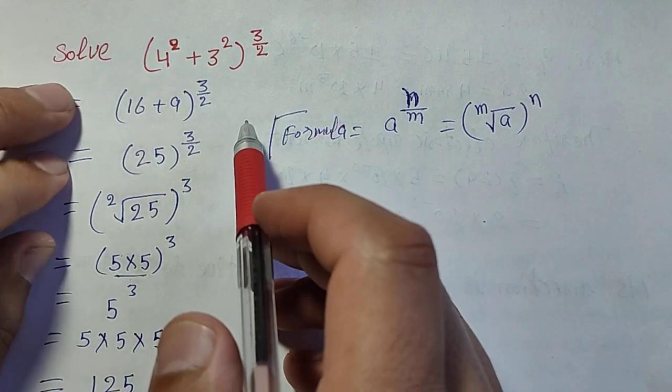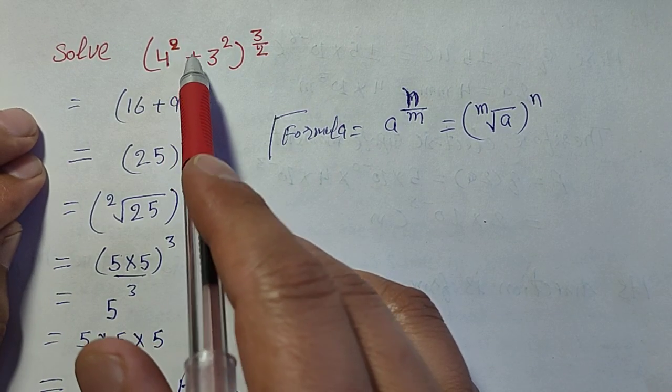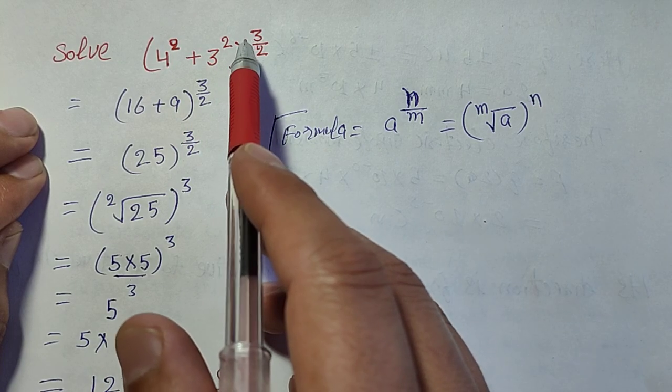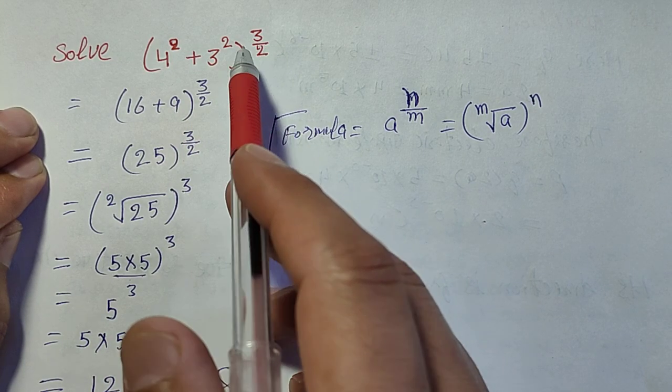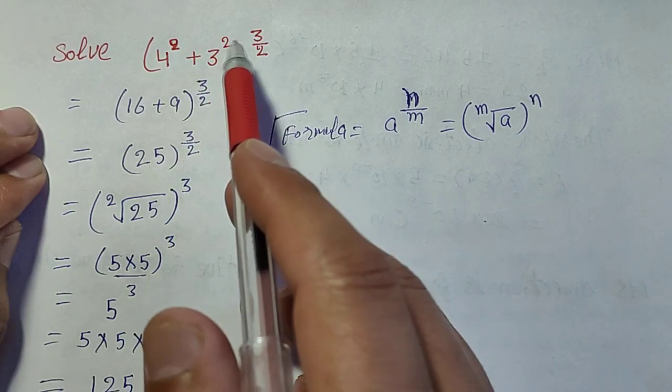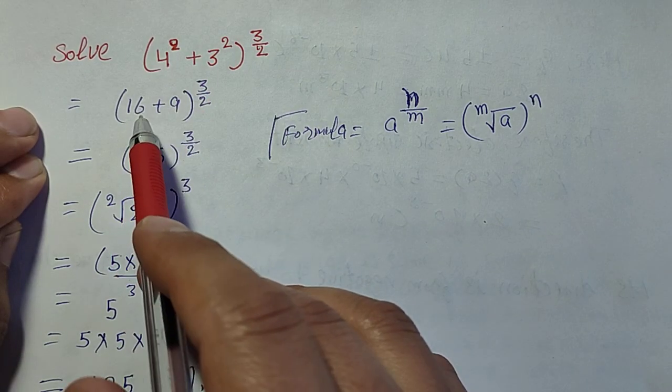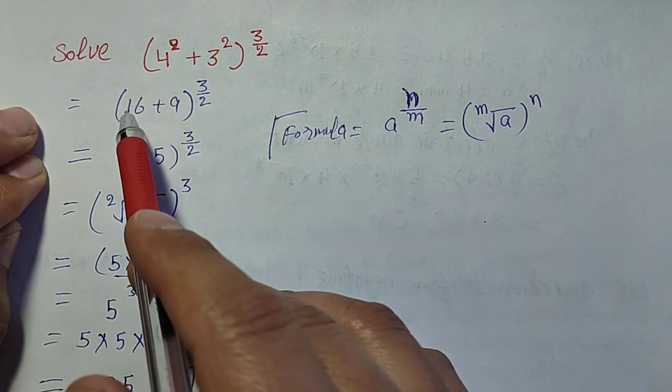Solve 4 square plus 3 square, the whole to the power three by two. First, 4 fours are 16, and 3 threes are 9.